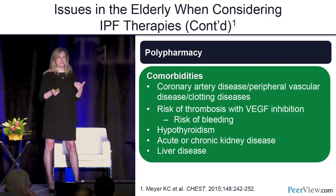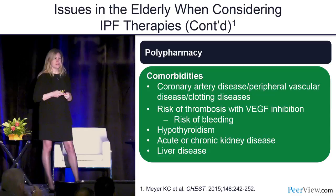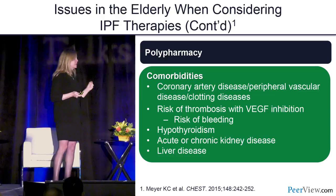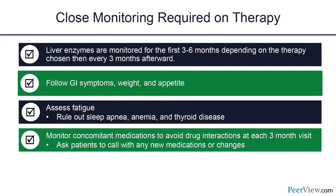Neither drug was studied in patients with end-stage or chronic kidney disease or liver disease. It's important to monitor liver enzymes — with nintedanib, get a baseline and ensure they're normal; after that it's at the physician's discretion. With pirfenidone we monitor monthly for six months then every three months; incidence of liver enzyme abnormality was low at around three percent. Follow GI symptoms, weight loss, and appetite — fatigue is common in IPF and with pirfenidone; look for other causes like anemia, sleep apnea, or thyroid disease.